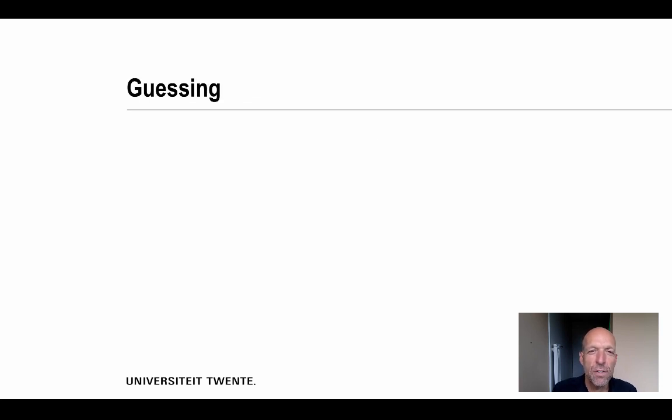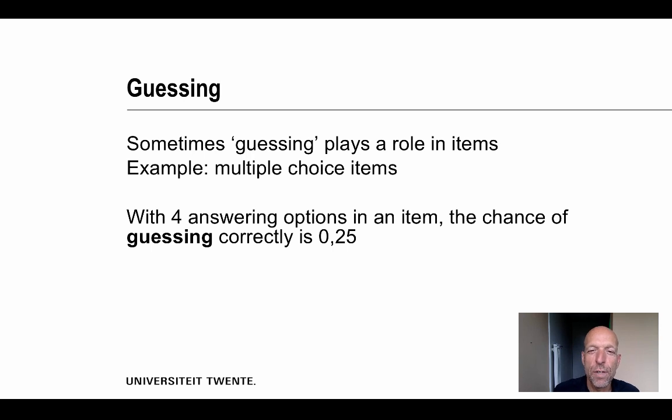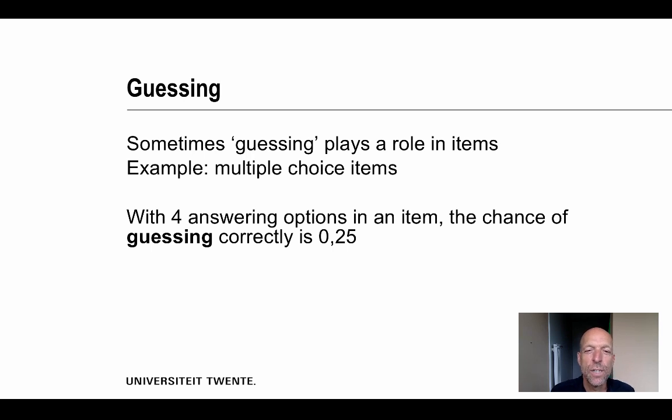A third characteristic is guessing. Sometimes guessing plays a role in items. For example, in multiple choice questions. With four answering possibilities of an item, the chance of guessing correctly is 0.25. This is included in three PL models with three parameters: difficulty, discrimination and guessing.